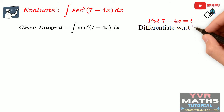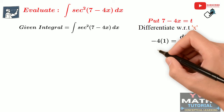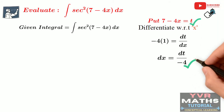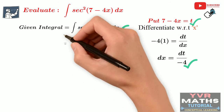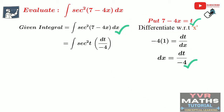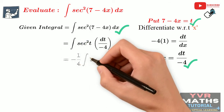Differentiate this with respect to x. The derivative of 7 - 4x is -4 and the derivative of t with respect to x is dt/dx. So the next step is -4 = dt/dx. If we cross multiply, the next step is dx = dt by -4. Now if we substitute these equations in the given integral, we get integral of sec²t into dt by -4. The constant -1 by 4 we can write outside of the integral.